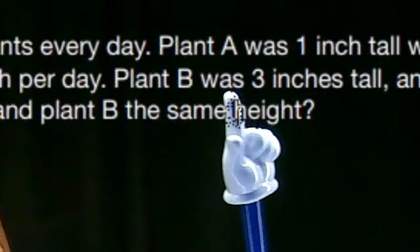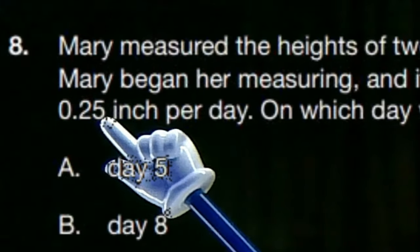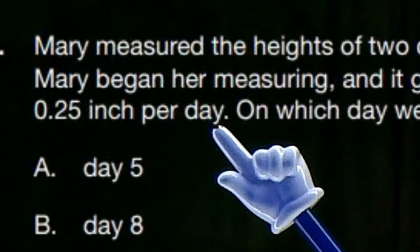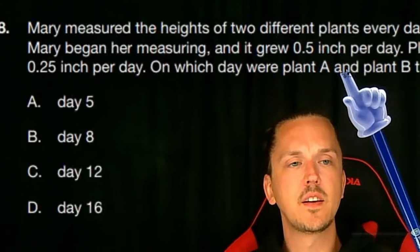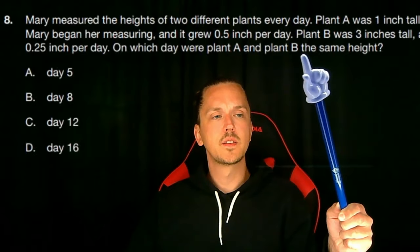Plant B was three inches tall, and it grew 0.25 inch per day. On which day were plant A and plant B the same height?